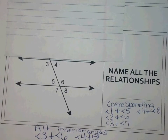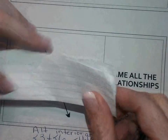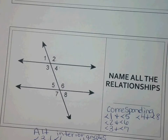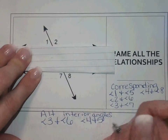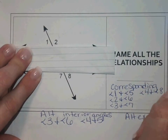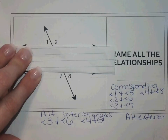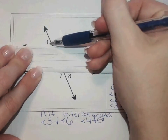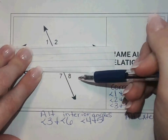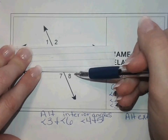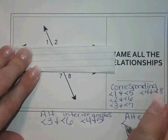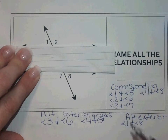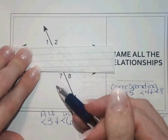Just like we have alternate interior angles, we also have alternate exterior angles — and exterior means outside. On the left side I have angle one, and going to the bottom set on the right side gives angle eight. So angle one and angle eight are a pair. And then I've got angle two and angle seven.